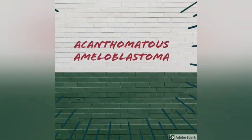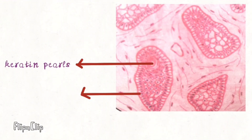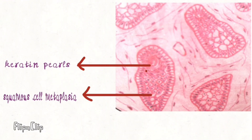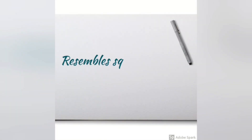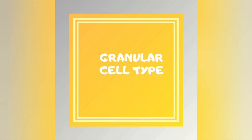Next is acanthomatous type of ameloblastoma. It is similar to follicular type, but the central cells here undergo squamous cell metaplasia. There is also keratin pearl formation. Keratin pearls are also seen in squamous cell carcinoma, and thus acanthomatous ameloblastoma resembles squamous cell carcinoma in histological appearance.